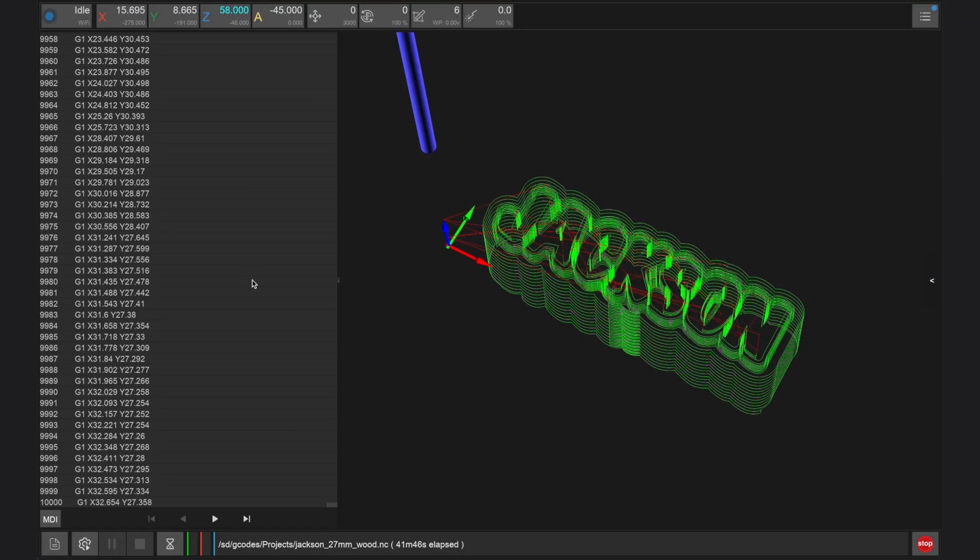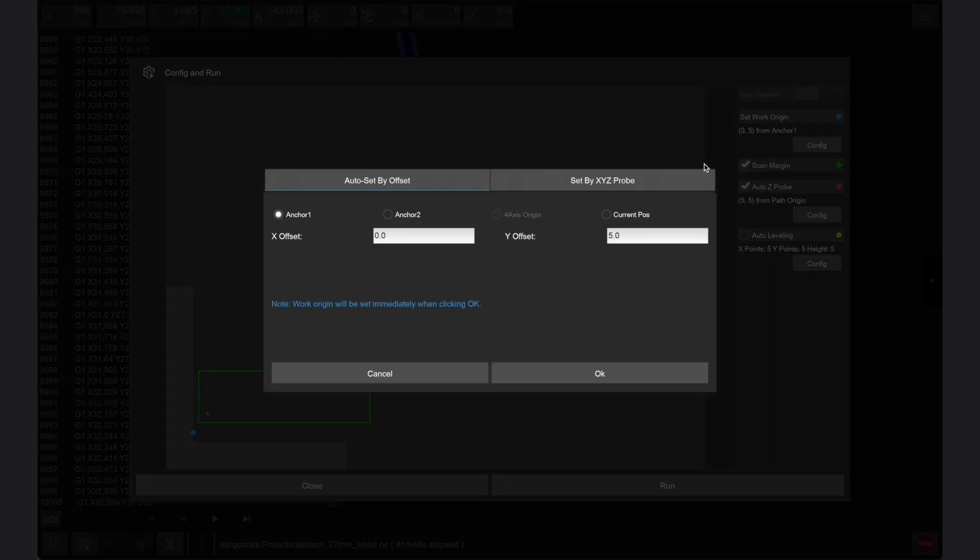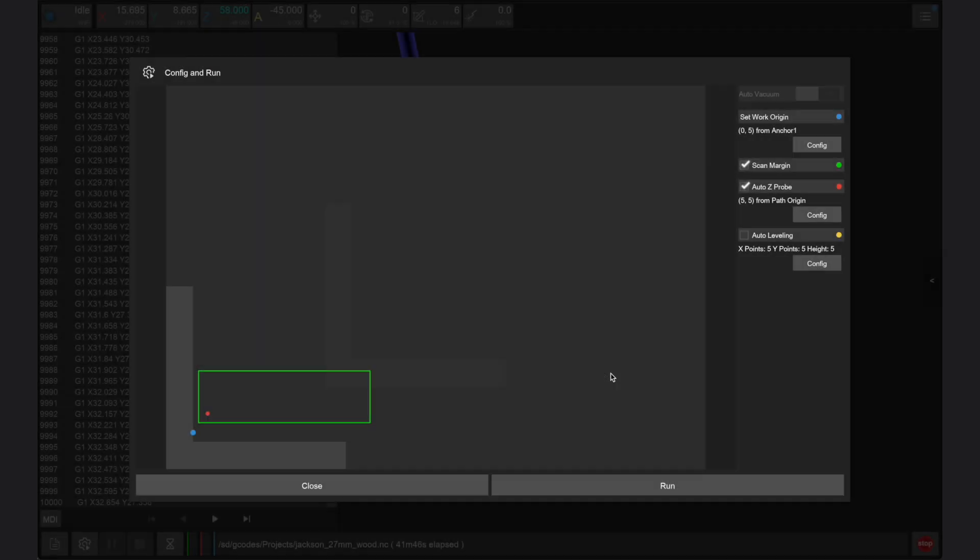This sequence can be done from the config and run window in the controller app. Press config for your work origin, then select set by XYZ probe. Here you will need to enter the height and diameter of your probing tool, but the height of 9 and diameter of 3.175 millimeters is the default parameter for the test probe shipped with the Carvera Air.